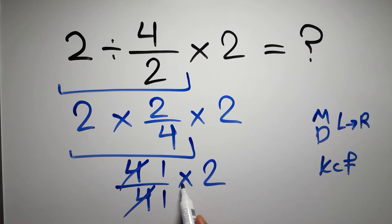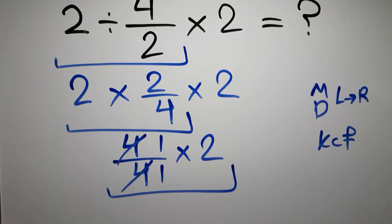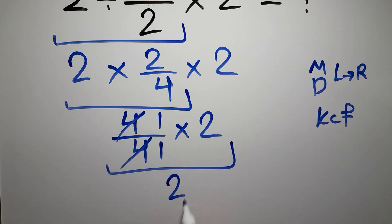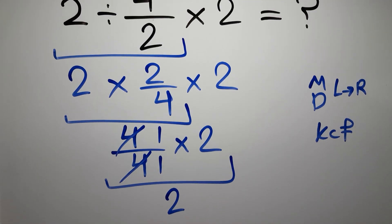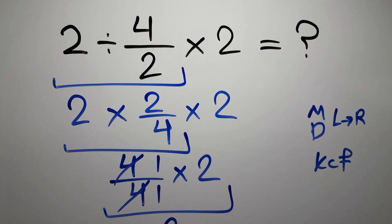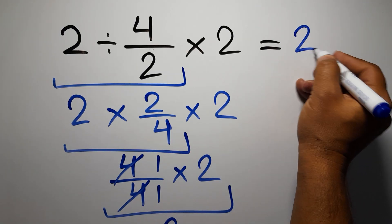4 over 4 is just 1. So 1 times 2 gives us 2. And this is our final answer to this problem. The correct answer is 2.